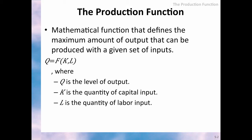At the center of the analysis is the production function, which is a mathematical expression that denotes the amount of output Q that can be produced given a set of inputs. Inputs are the factors of production, and normally in economics we use K for capital and L for labor. The simplest production function is: output Q is a function of two inputs, K, which is the number of units of capital, and L, which is the number of units of labor.